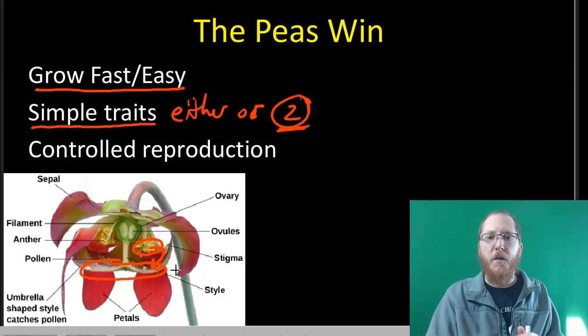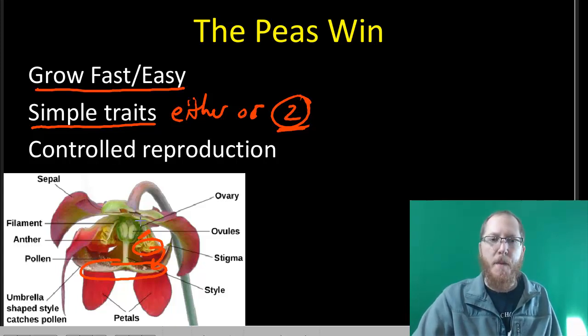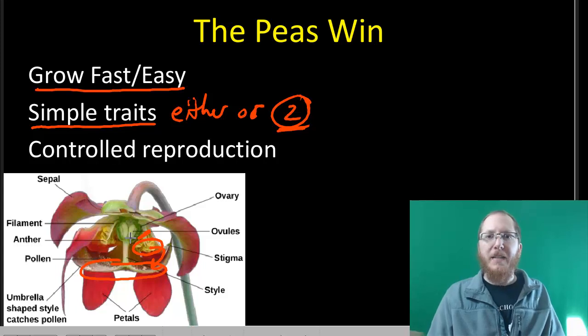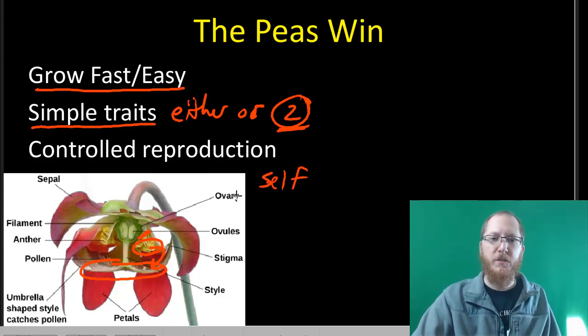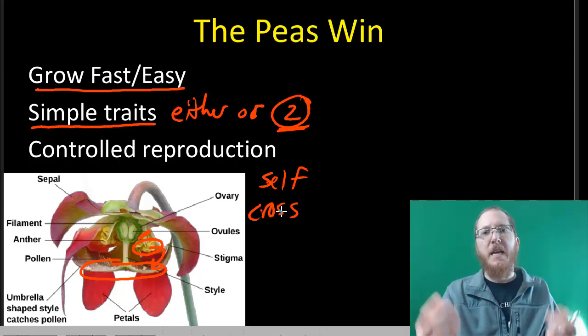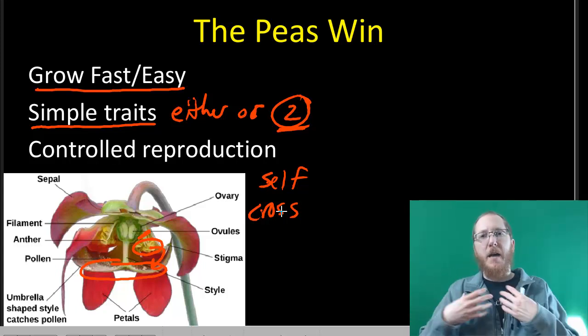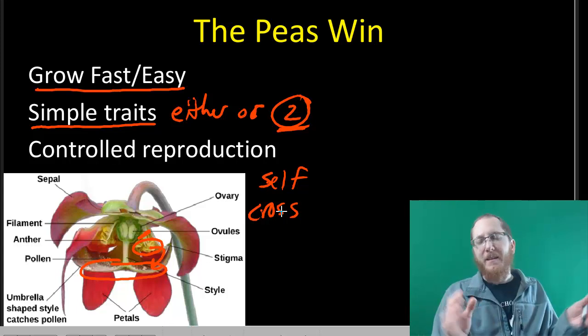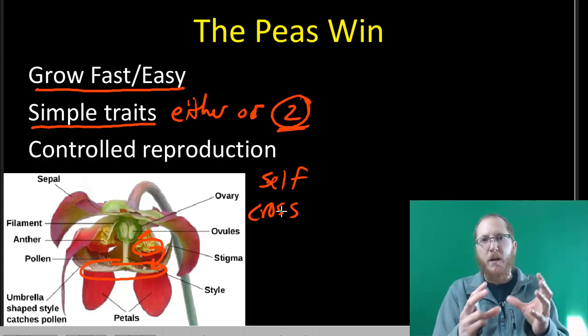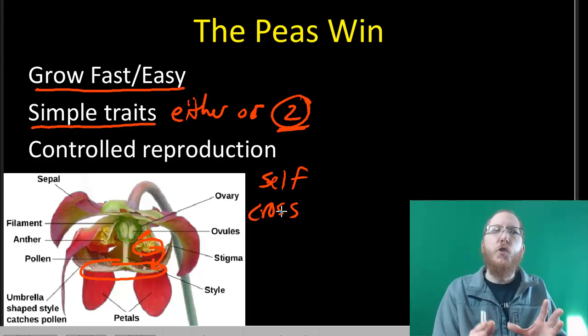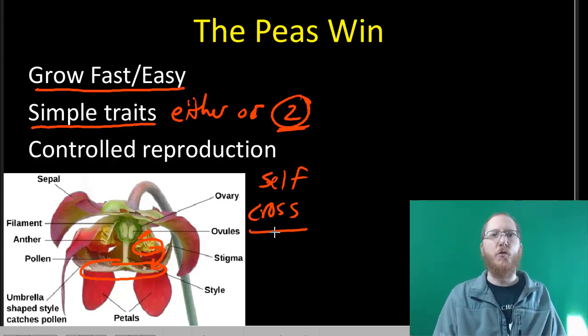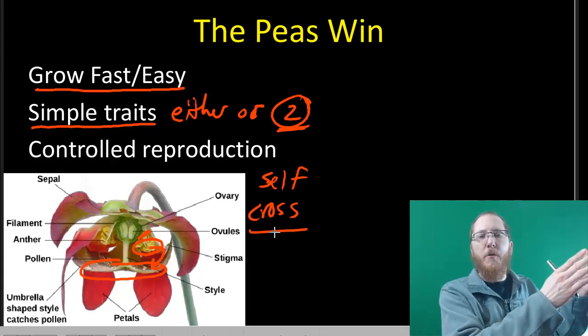But you can also do what Mendel did, which would be clip these guys before the pollen officially was released. And then he could move around and he could pollinate them however he wanted. This would be what we call cross-pollination. So there's self-pollination, when it's just one guy straight to himself. And then cross-pollination, where we could take pollen from one specific plant, say a tall plant, and he could go over to a short plant and pollinate it on his own. He could control which plant pollinated which plant, and so this made it very useful for him to track stuff.